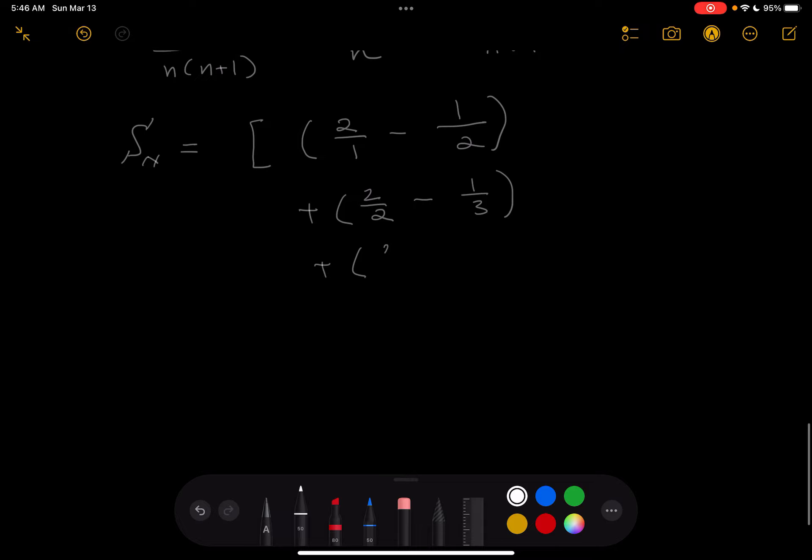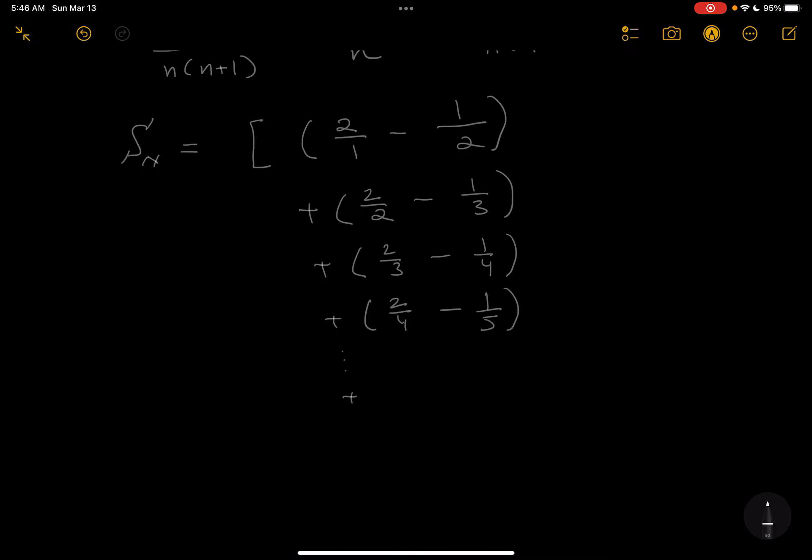Let's keep going. Plus 2 over 3 minus 1 over 4. Let's write another one down. 2 over 4 minus 1 over 5. And now I'm going to do this yada, yada, yada. And where are we going to go to? Towards the end.